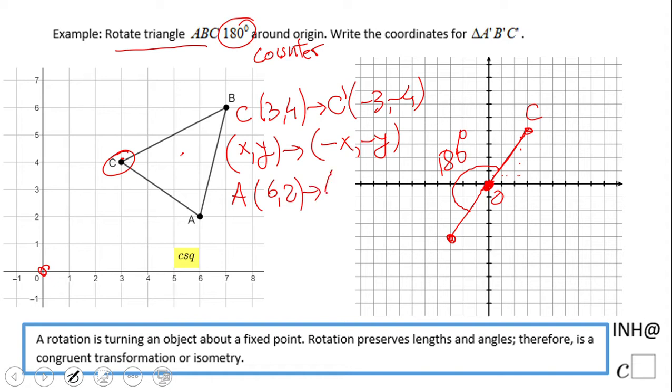That will be A prime (-6, -2). Point D, which is (7, 6), if we rotate that 180 degrees, we get (-7, -6). So that's it.